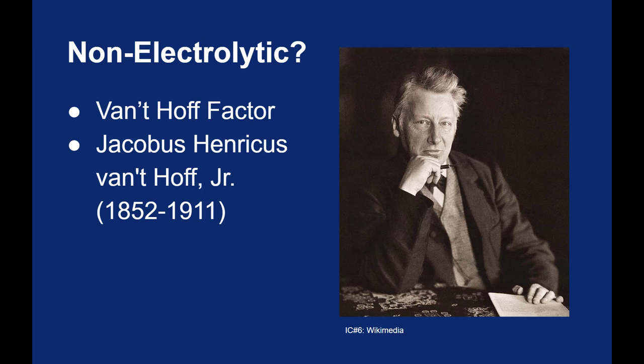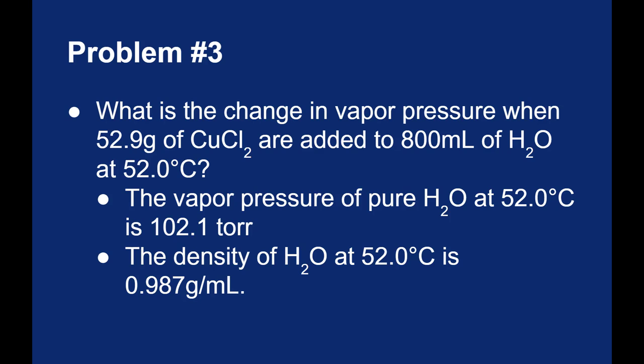I have 52.9 grams of copper chloride, and I add it to 800 milliliters of water at 52 degrees Celsius. I know the vapor pressure of pure water at this temperature is 102.1 torr. I also know the density of water at 52 degrees Celsius is 0.987 grams per milliliter. So let's figure out what the change in the vapor pressure will be, or what will the new vapor pressure be for the copper(II) chloride solution.